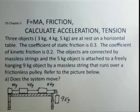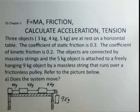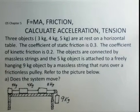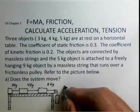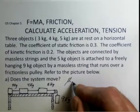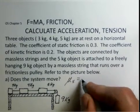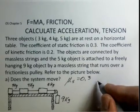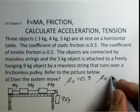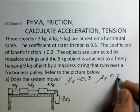We have three objects on a horizontal table: three kilograms, four kilograms, five kilograms. There's static friction and there's kinetic friction. Coefficient of static friction: 0.3. Coefficient of kinetic friction: 0.2.